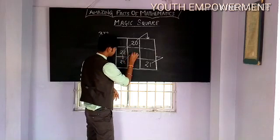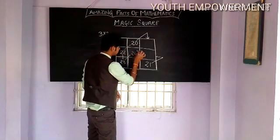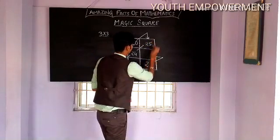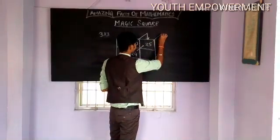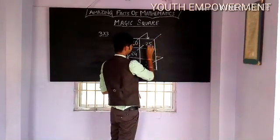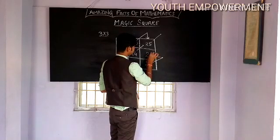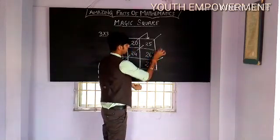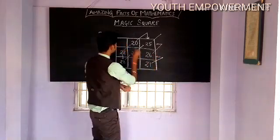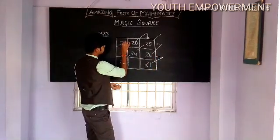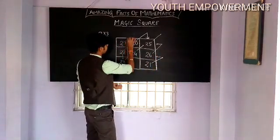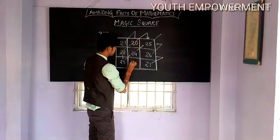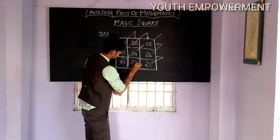Right foot diagonal — there is an empty box, then right foot diagonal: 25. Now right foot diagonal — there is no box, so you need to enter the next digit here: 26. Now right foot diagonal, to the left — there is a vacancy: 27. Right foot diagonal down — there is a vacancy: 28.